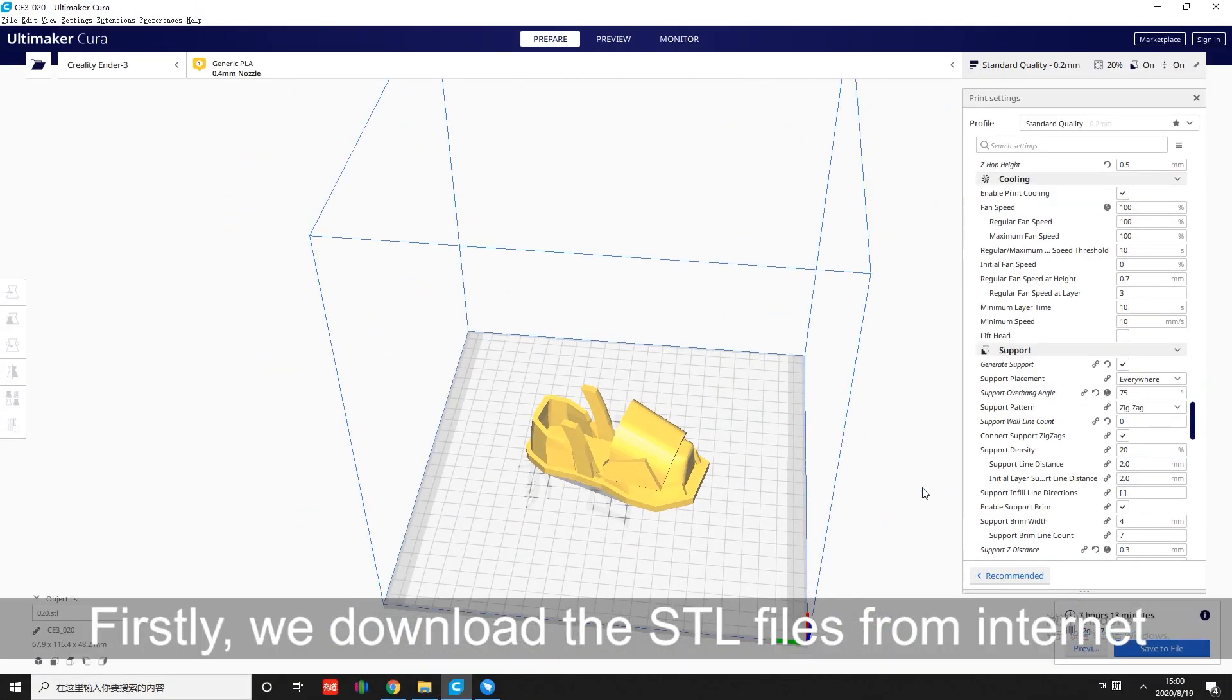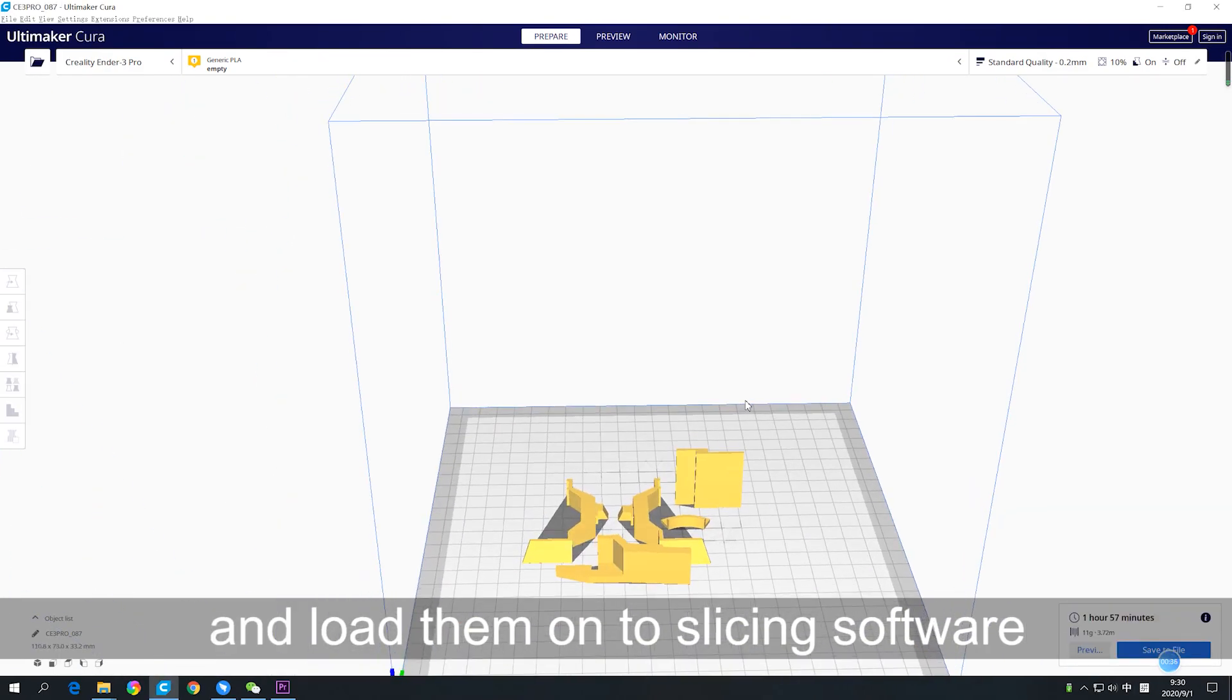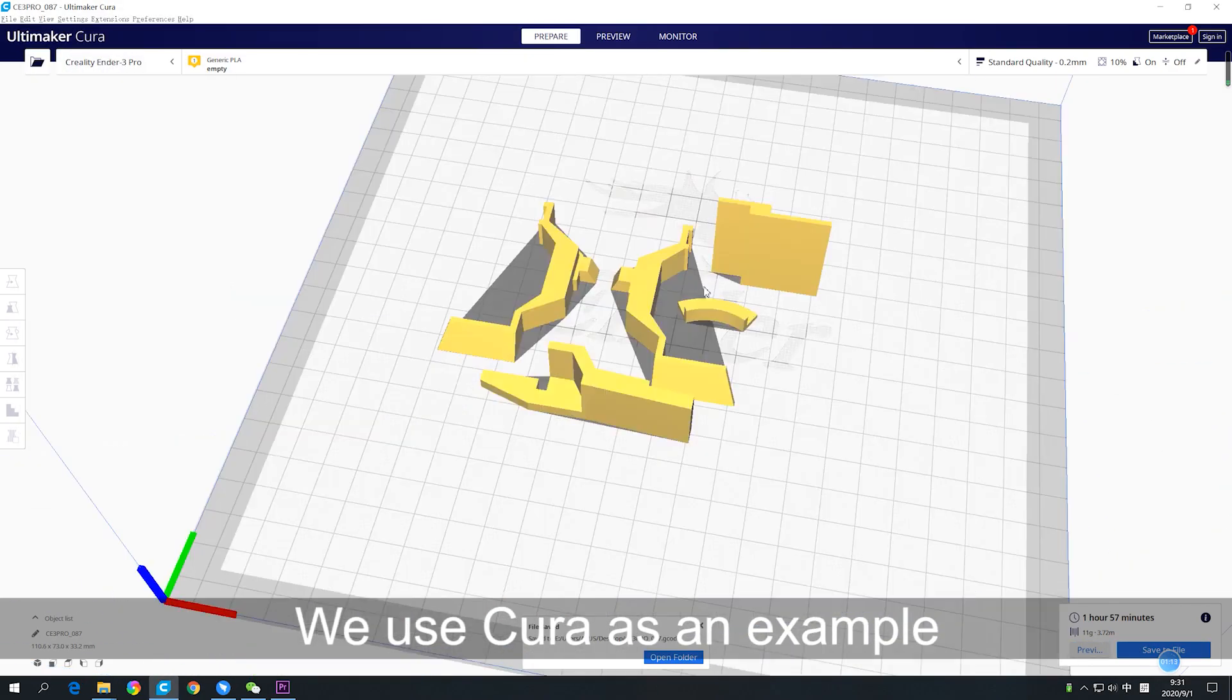Firstly, we download the STL files from the internet and load them onto the slicing software. We use Cura as an example.